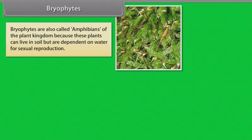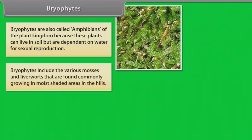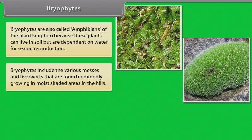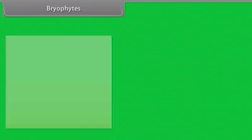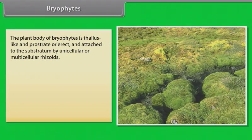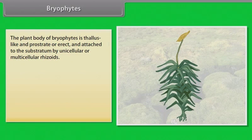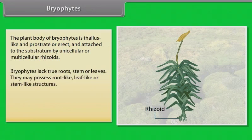Bryophytes are also called amphibians of the plant kingdom because these plants can live in soil but are dependent on water for sexual reproduction. Bryophytes include the various mosses and liverworts that are found commonly growing in moist shaded areas in the hills. Bryophytes usually occur in damp, humid and shaded localities. Bryophytes play an important role in plant succession on bare rocks or soil. The plant body of bryophytes is thallus-like and prostrate or erect and attached to the substratum by unicellular or multicellular rhizoids. Bryophytes lack true roots, stem or leaves. They may possess root-like, leaf-like or stem-like structures.